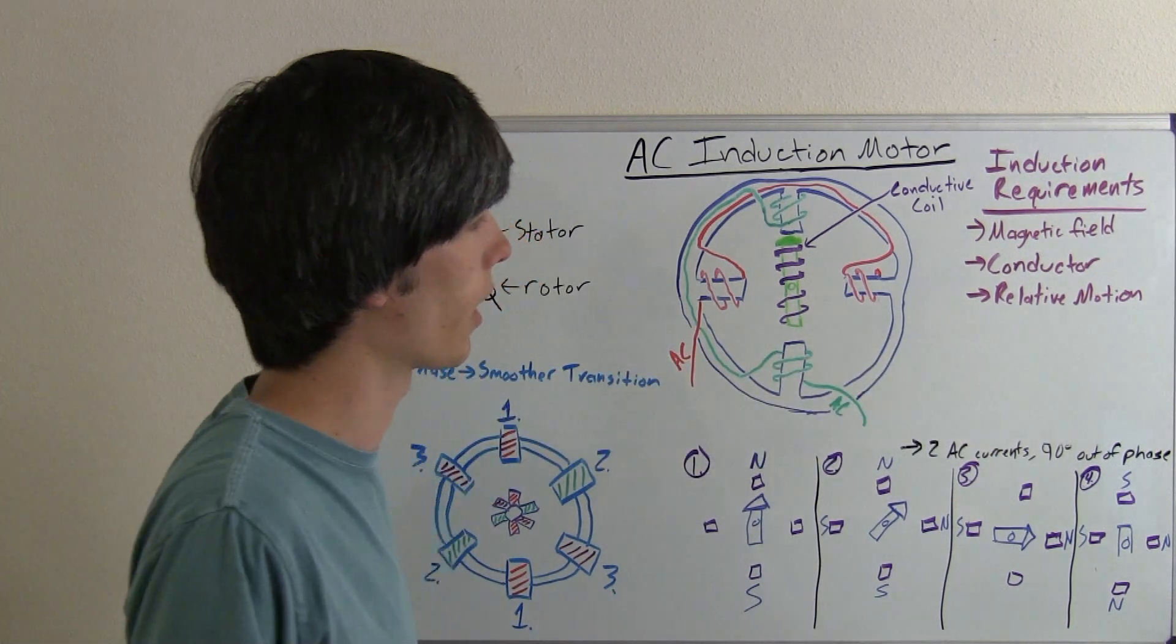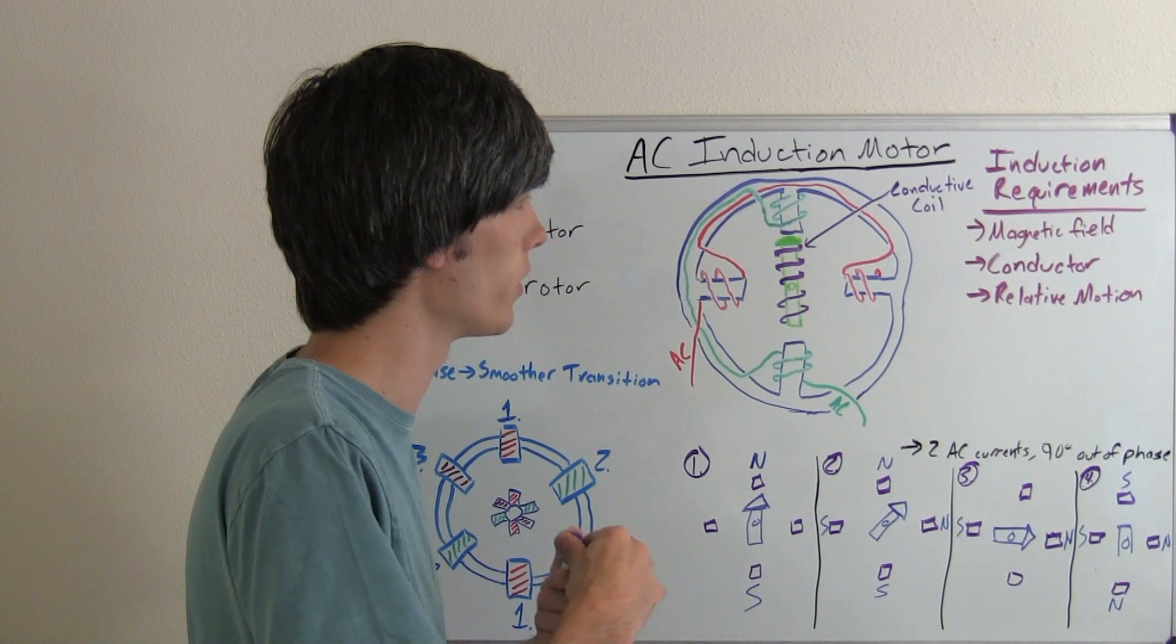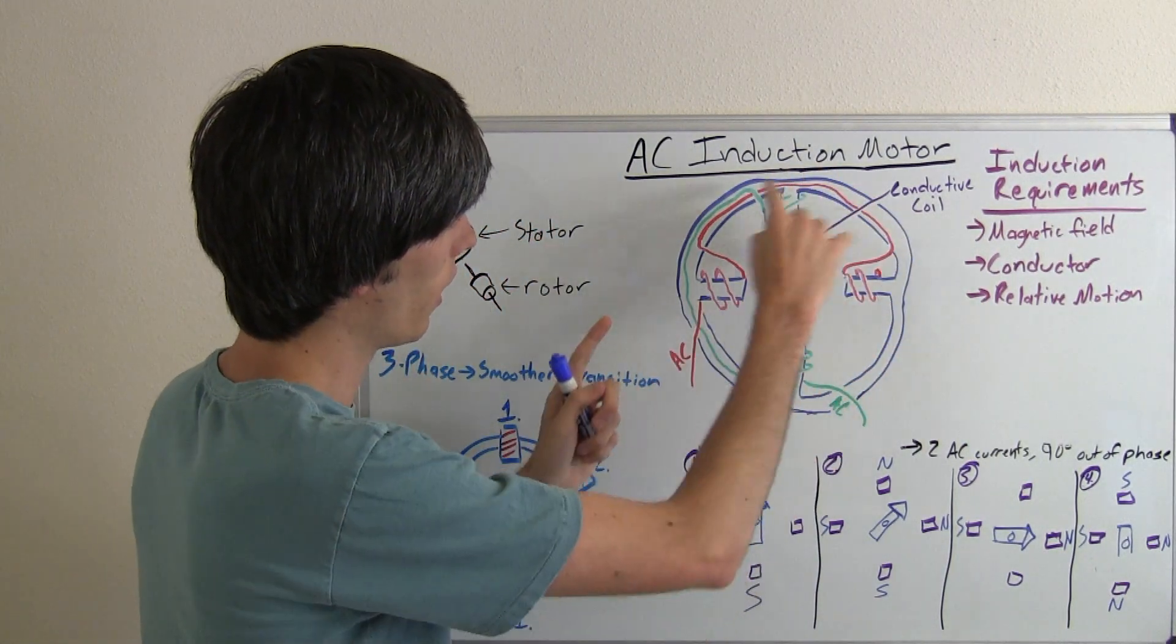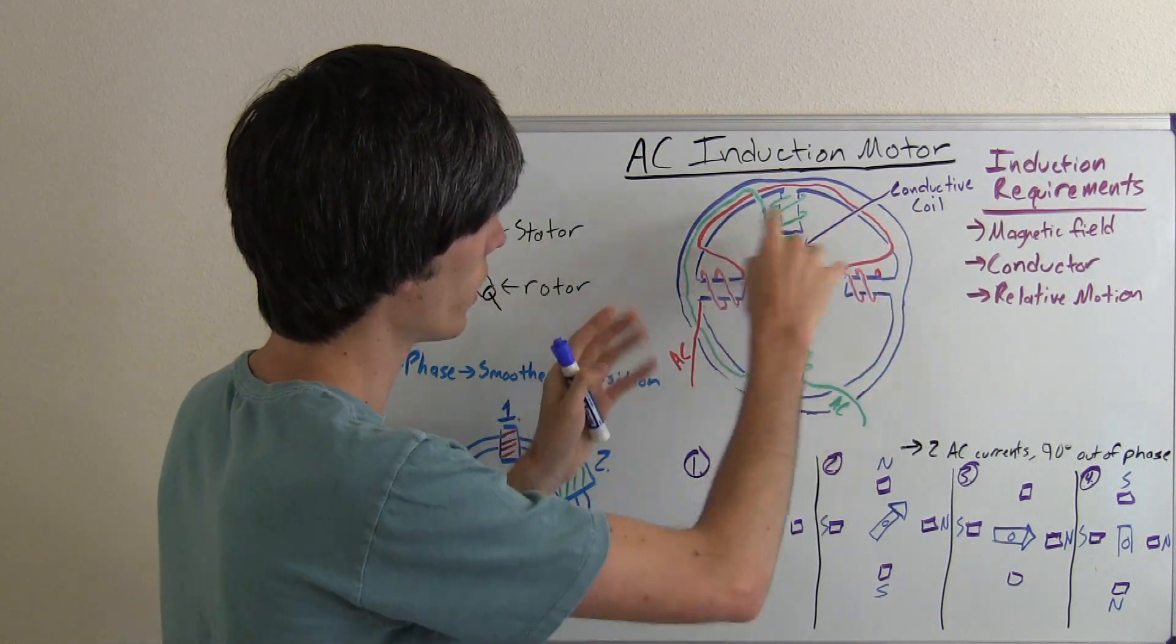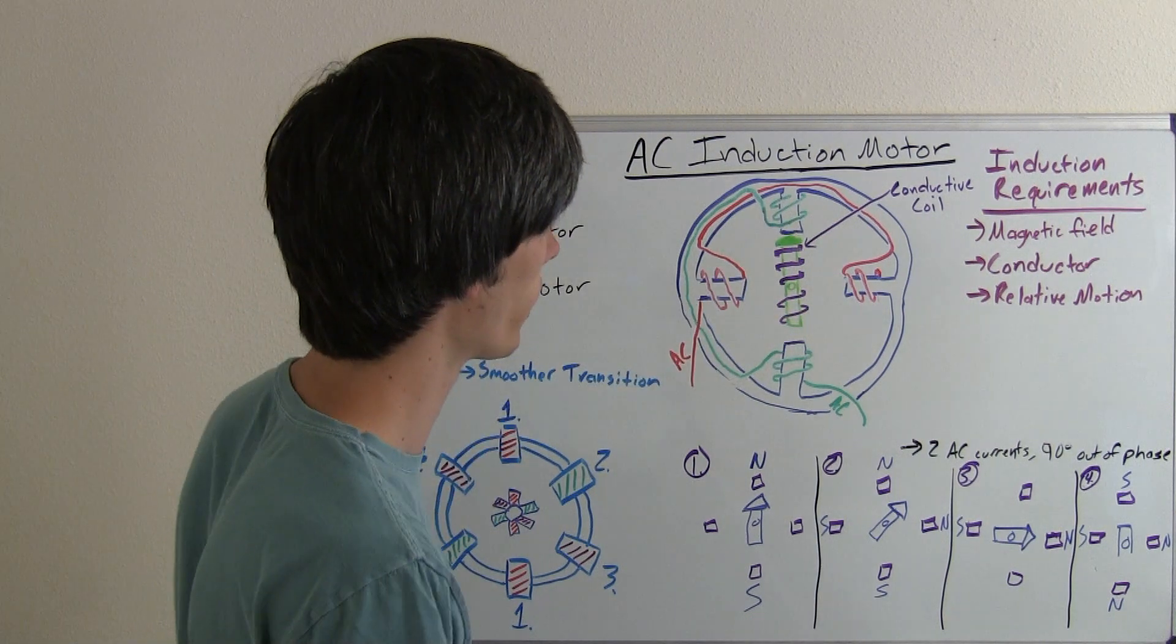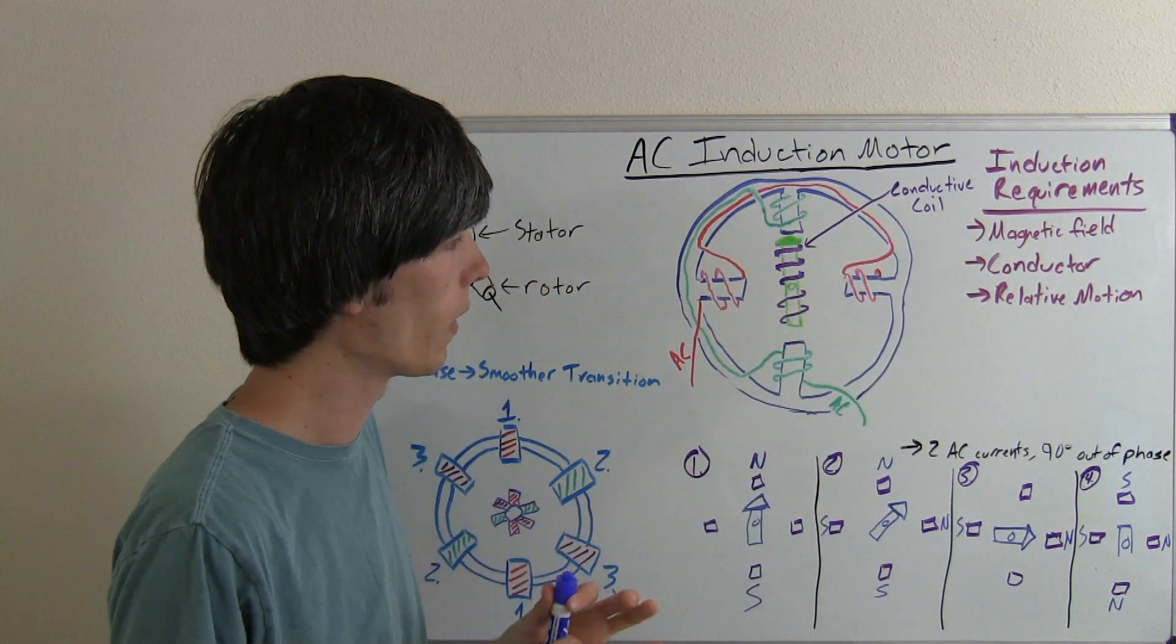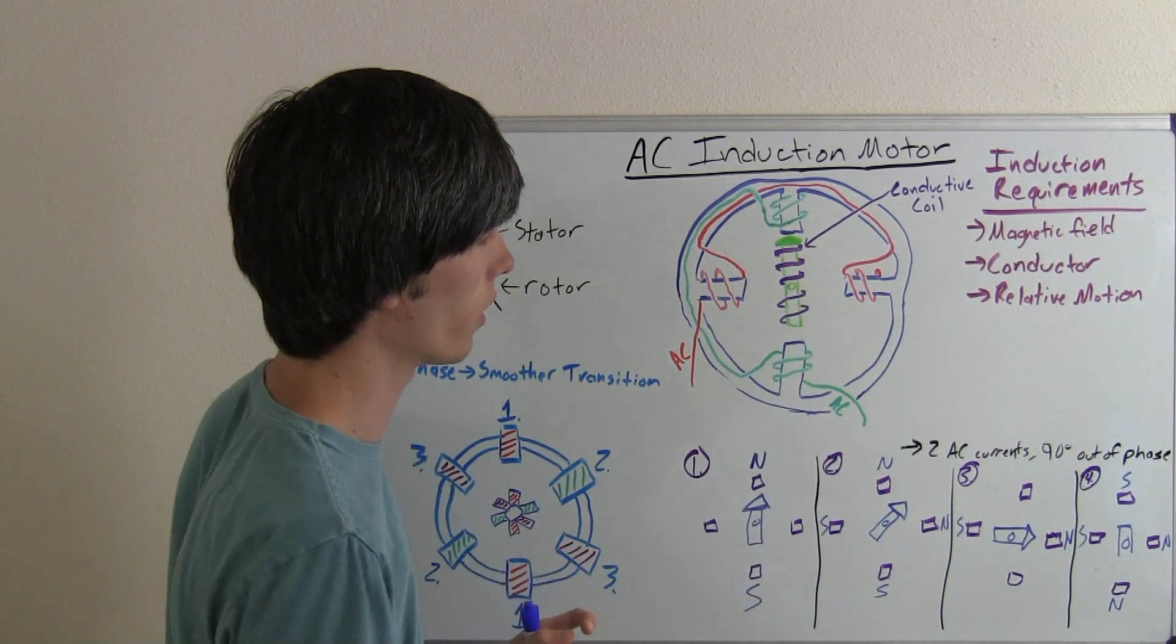And then we need relative motion. And we create the relative motion, as you know from watching the AC motor video, by rotating the magnetic current throughout here. So kind of creating a magnetic current rotation without actually rotating anything. You alter the magnetic fields in here. So by rotating that magnetic field, you induce a current into this coil.